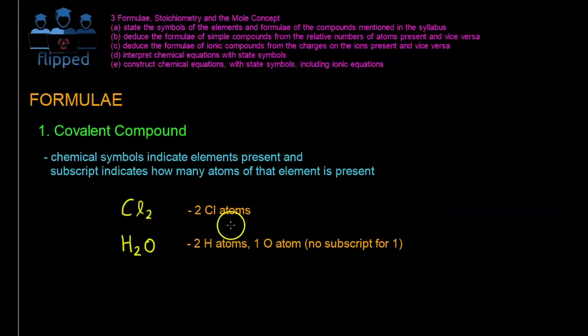This one is H2O, which means there's two H atoms and one O atom. There's no subscript for 1, so if you write it like H2O1, this is wrong. If the subscript is 1, we just leave it blank, it's given that it will be 1.